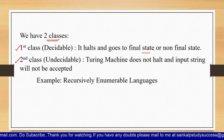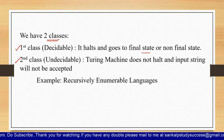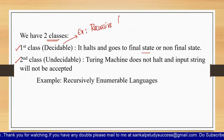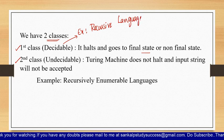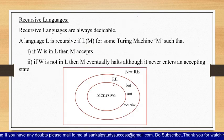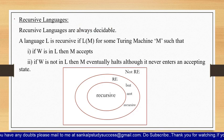The example for decidable is recursive languages, and the example for undecidable is recursively enumerable languages. There is a difference between recursive languages and recursively enumerable languages — recursive languages are decidable and recursively enumerable languages are undecidable. These are the two classes we have.